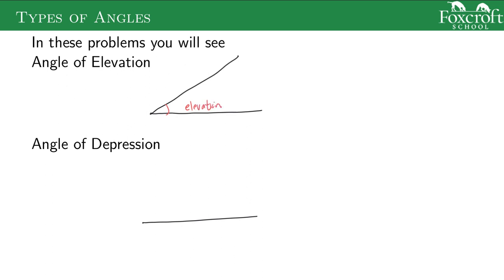Elevation means you're going up. Angle of depression means you're going down, so I start with that horizontal and I go down, and that gives me this angle here, which is my angle of depression. This is just helpful in knowing that when they're talking about specific angles, they're kind of talking about specific things in the picture.